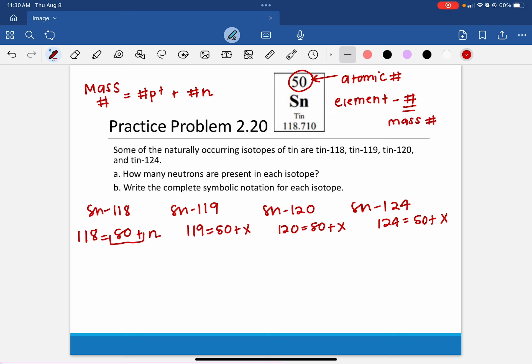We need to do some moving around for every single one of these to get N or X by itself. Whichever variable you choose to use is perfectly fine with me. Do the opposite and it cancels. So it will be 118 minus 50 equals your X. 119 minus 50 equals X. 120 minus 50 equals X.